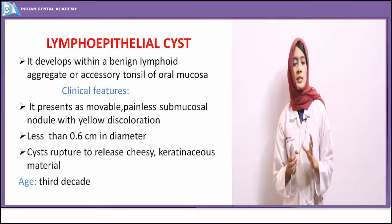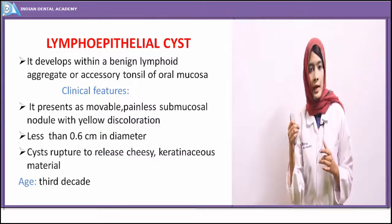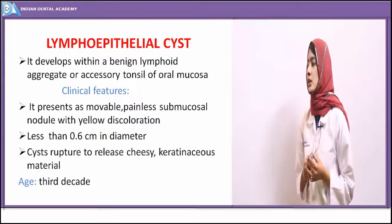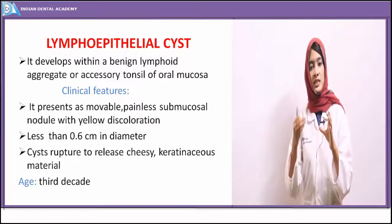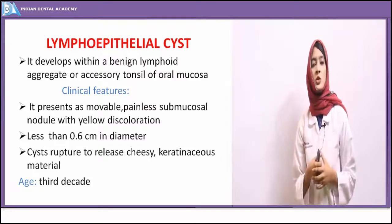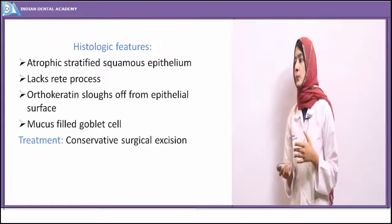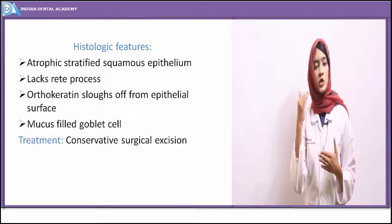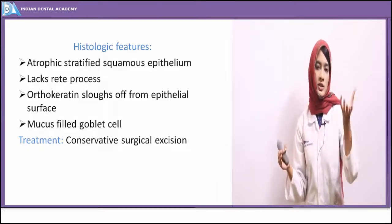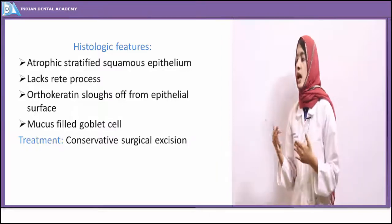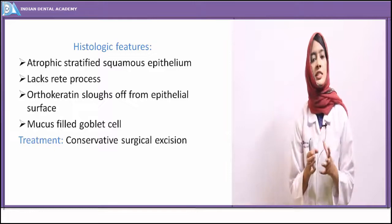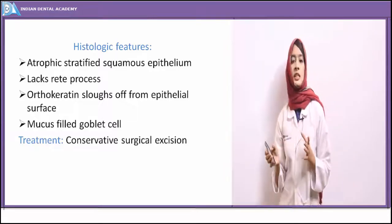Clinically, it presents as a painless submucosal nodule with yellowish discoloration, about 0.5 cm in diameter, movable. The keratin eventually sloughs off from the epithelial surface, causing cyst rupture and release of cheesy keratinaceous material into the oral cavity. Microscopically, it shows an atrophic epithelial lining — no rete ridges, no hyperplasia — and because it occurs in a lymphoid aggregate, lymphoid tissue is present, along with excessive keratin deposition. Treatment is conservative surgical excision.